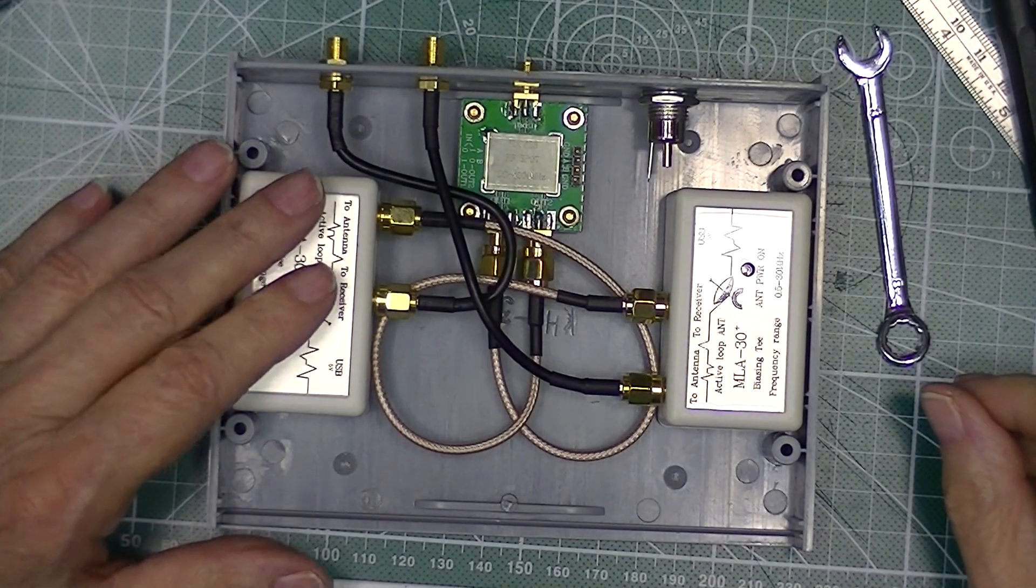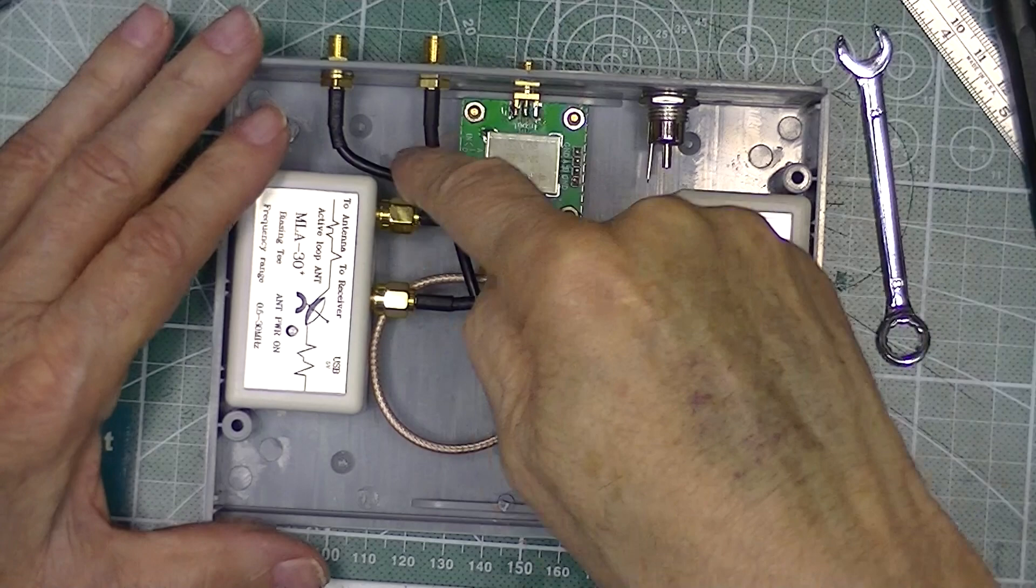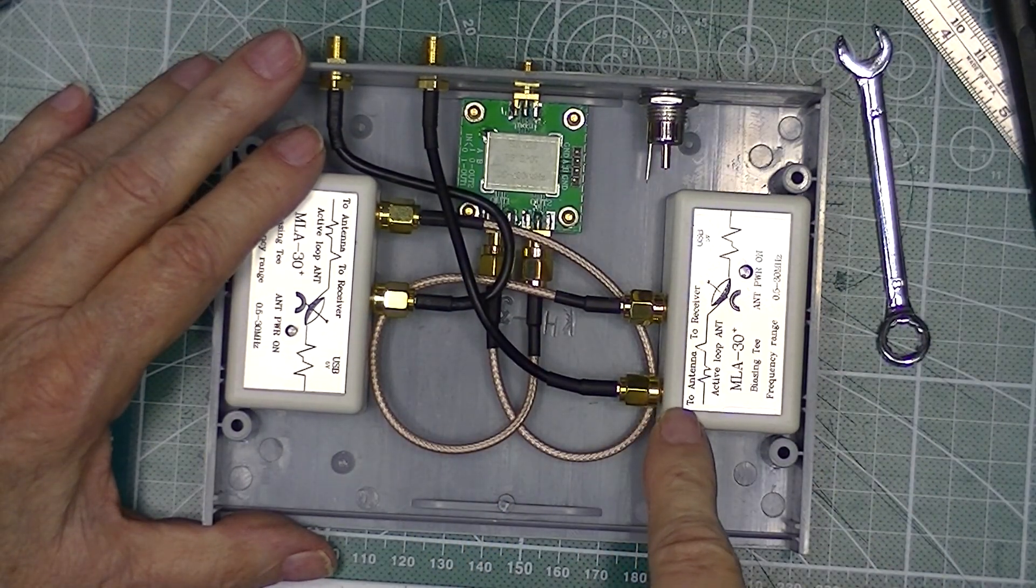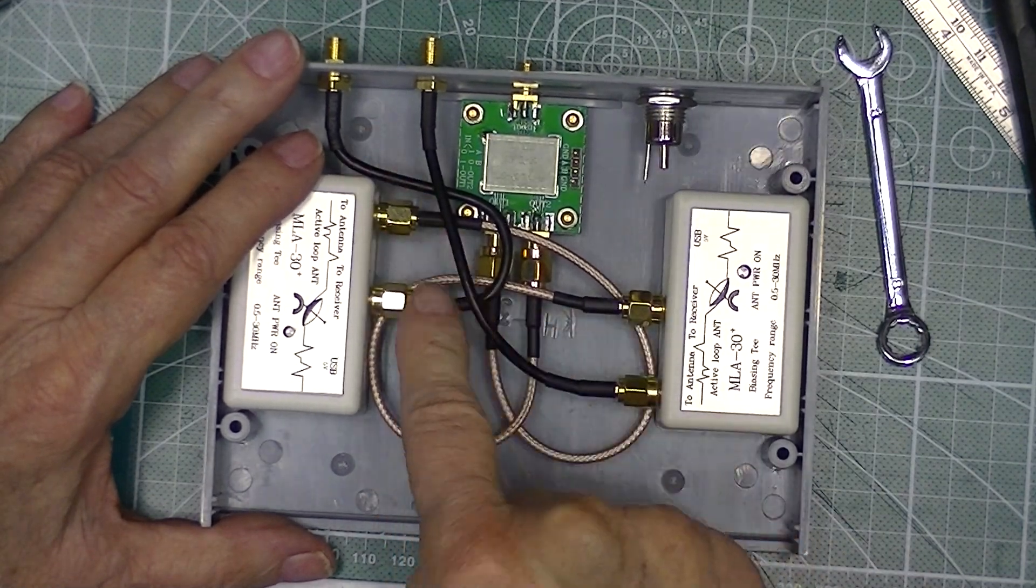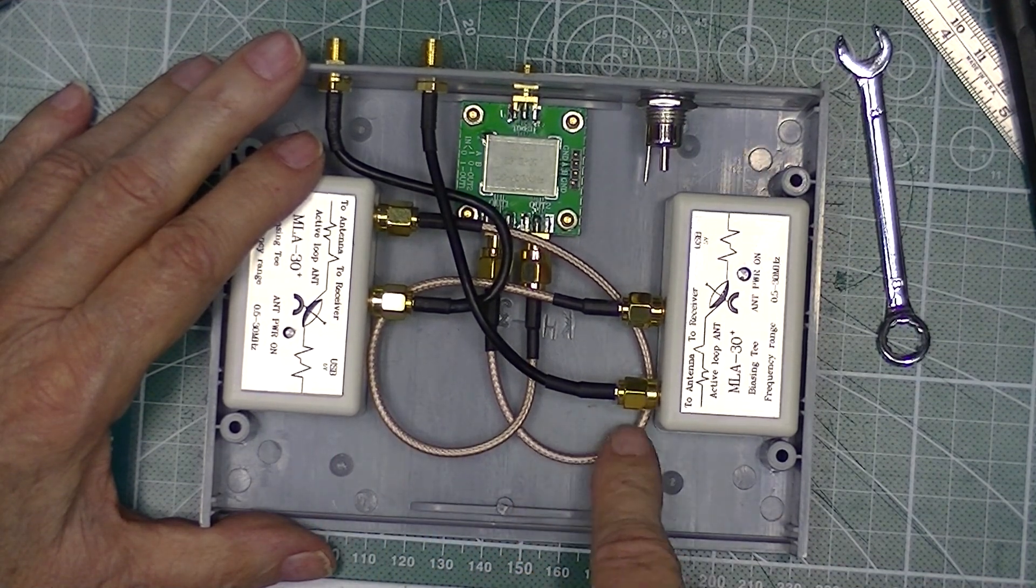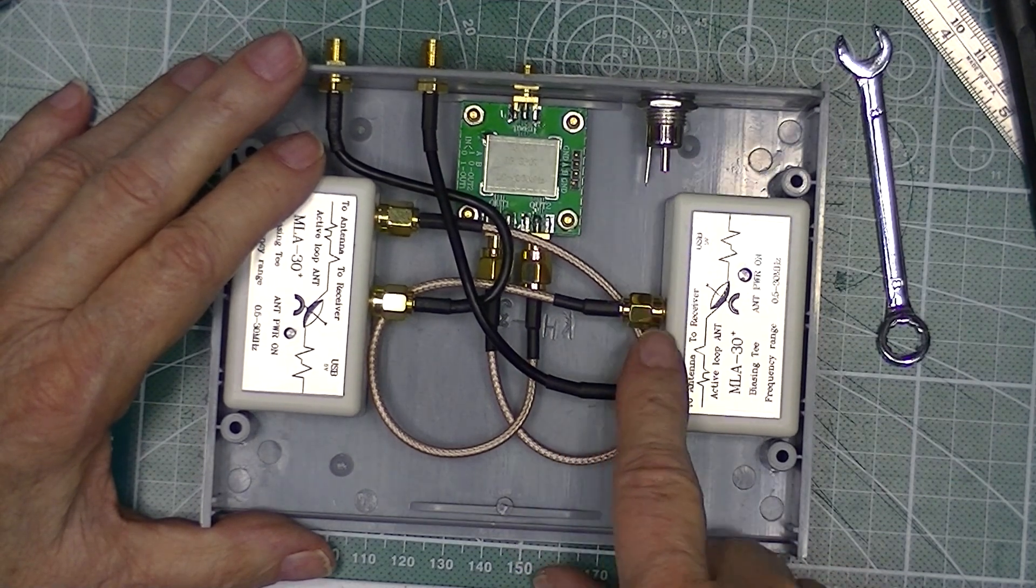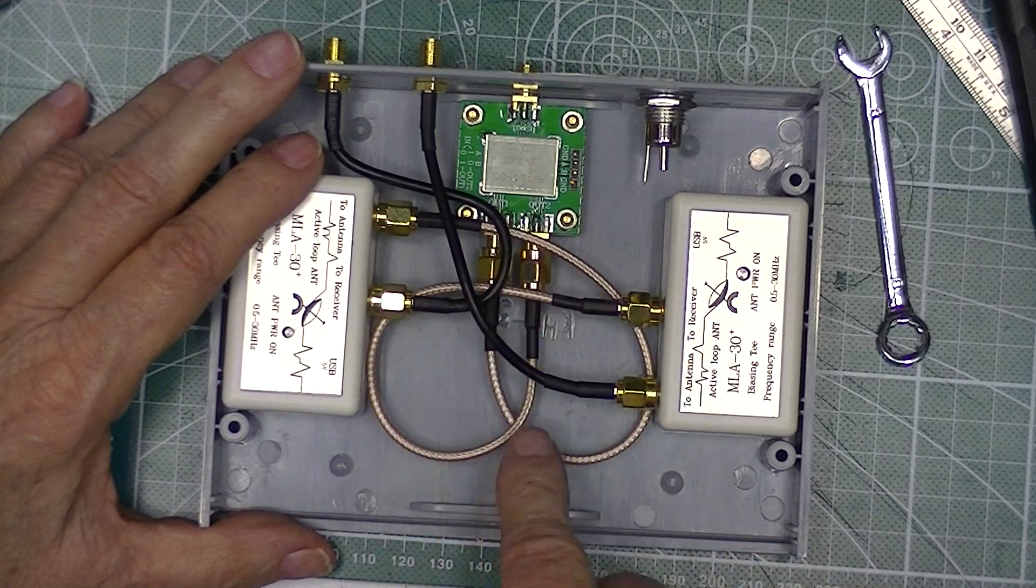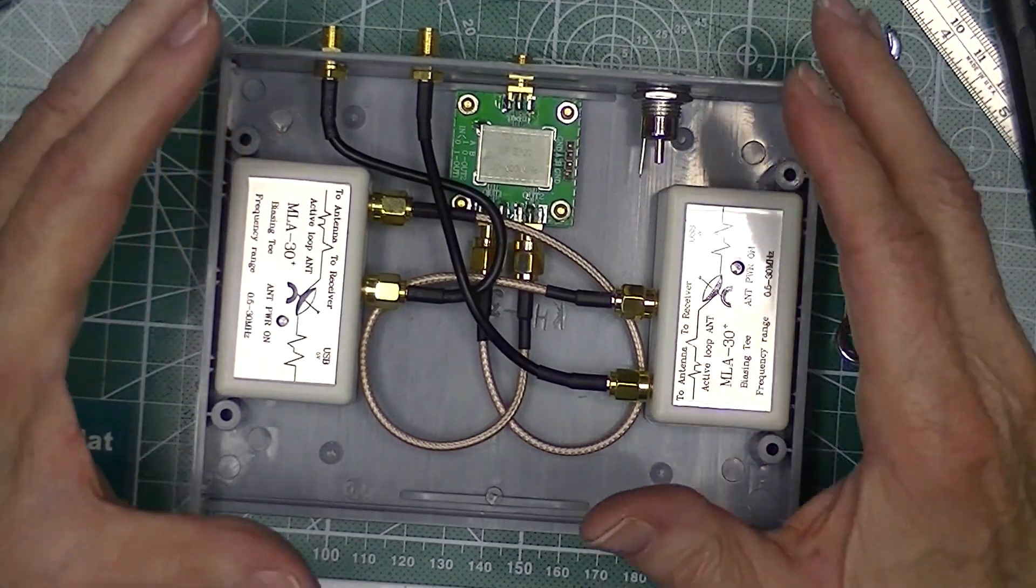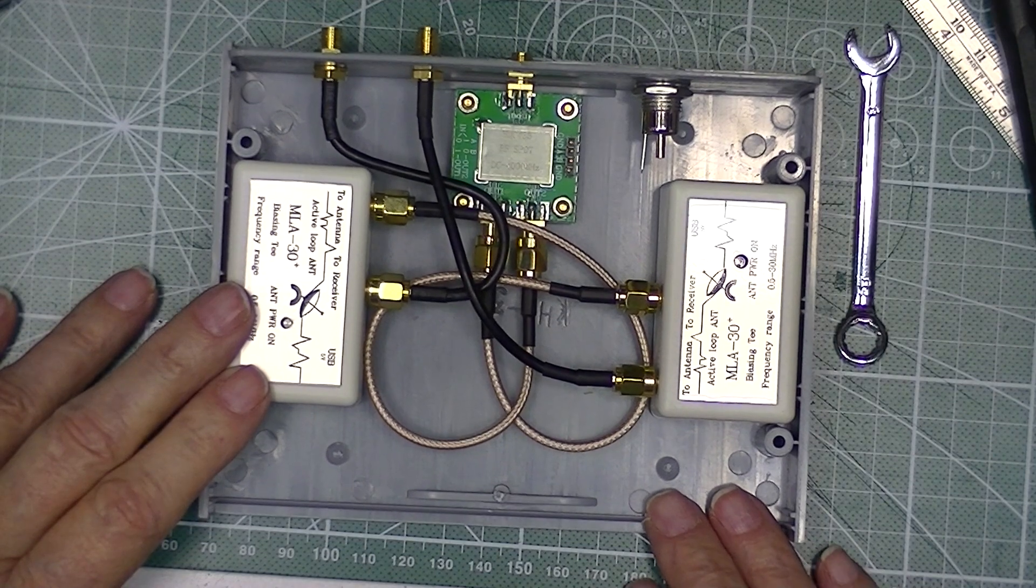This completes the RF wiring. Each external antenna connection, there's two of them of course, is routed to one of the biased T's to the antenna input. They're the black pieces. And then these tan pieces that indicate to receiver are going to the inputs of this switch. So this is the RF portion. I'm going to complete the power wiring probably in the next video. Thank you.